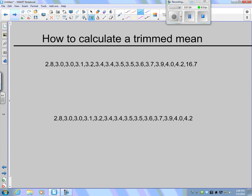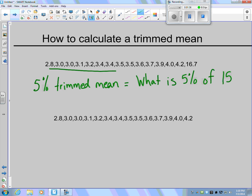For example, if we want to calculate the trimmed mean of this data set, let's calculate a 5% trimmed mean. To do that, the first thing we have to do is answer what is 5% of the number of numbers in our data set. In this case, there are 15 numbers listed here, so that's where I'm getting the 15 from.